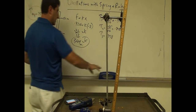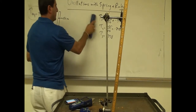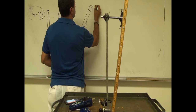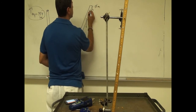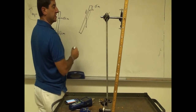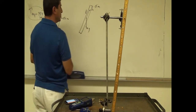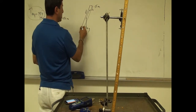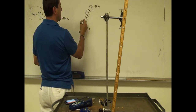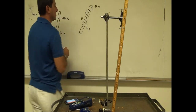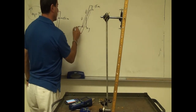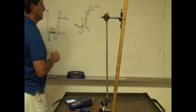Now let's calculate the theoretical period. The pivot is at the 15 centimeter mark, which is 0.15 meters. The distance between the pivot point and the center of mass I'll call little d, and the weight is mg. The distance from the pivot point to where the spring is attached I'll call big D, and the spring force is kx in that direction.